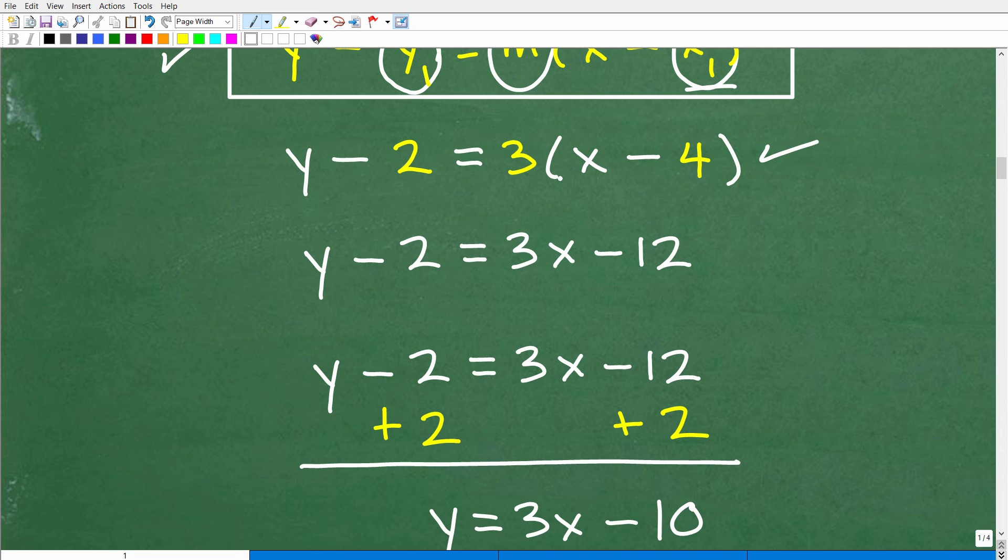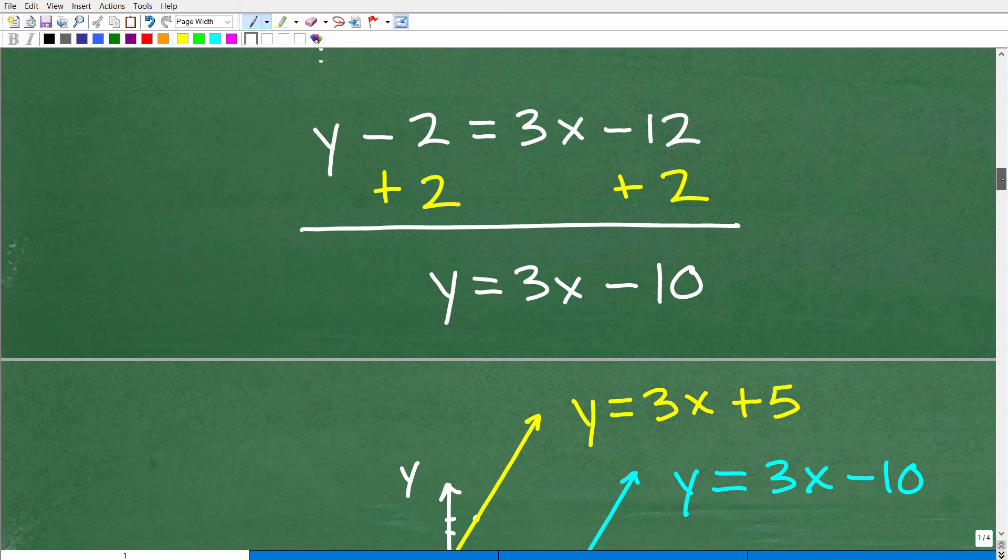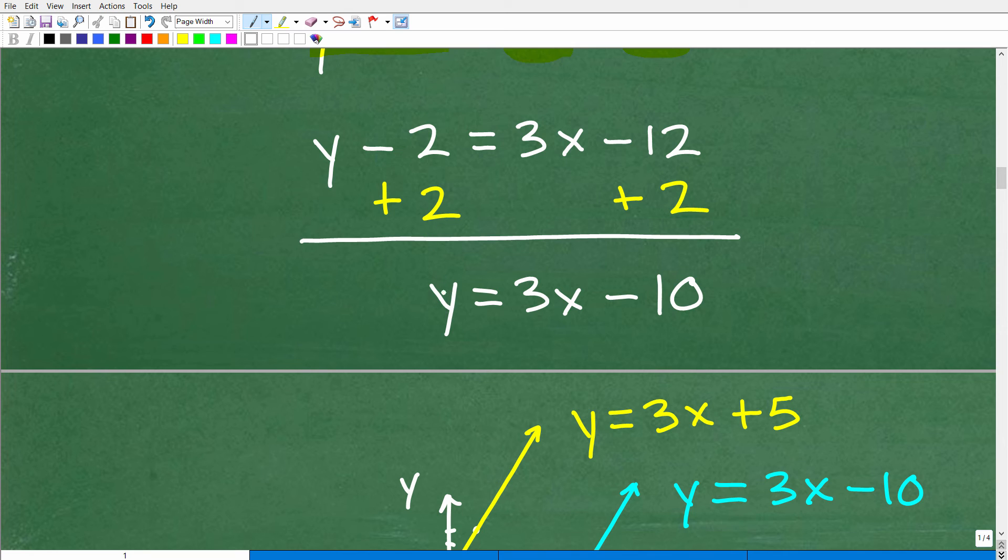So the first thing you do after you plug in all your values into the formula is use the distributive property. So that's going to be 3 times X. And this 3 times that, times that negative 4. So we're going to get 3X minus 12. So we have Y minus 2 is equal to 3X minus 12. So we're going to solve for Y by simply adding 2 to both sides of the equation to get Y all by itself. So you're going to get Y is equal to 3X and negative 12 plus 2 is a negative 10. And there you go. You can see that this line is in Y equals MX plus B form.